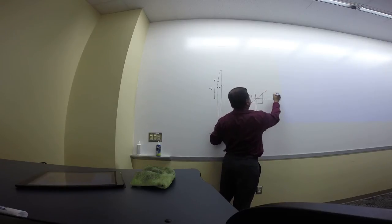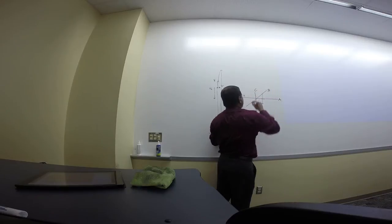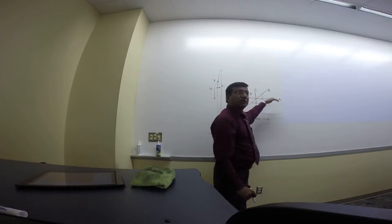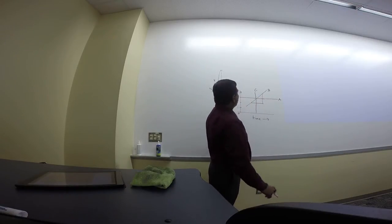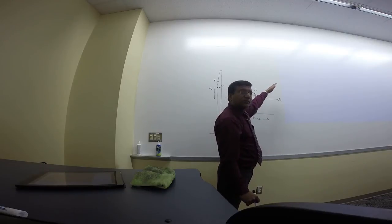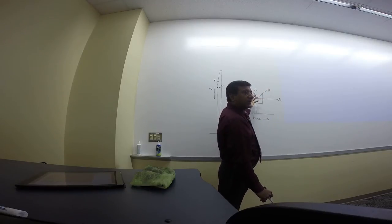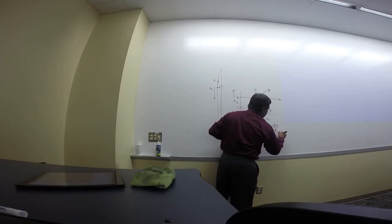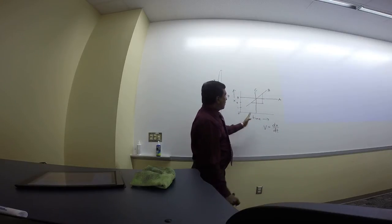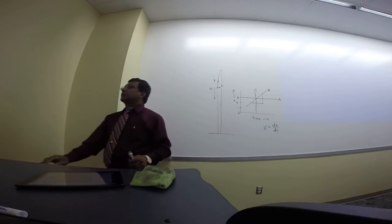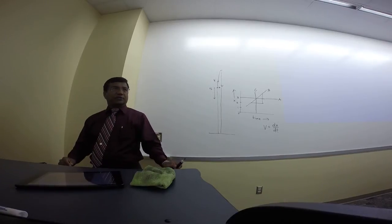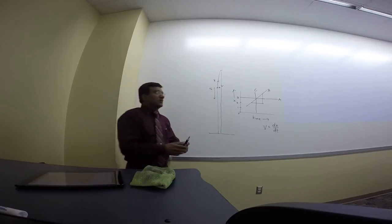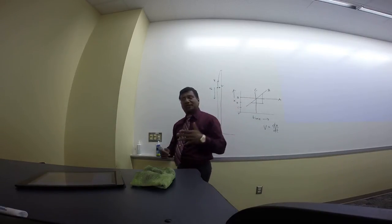Reviewing the three graphs: Graph A — horizontal line — object at rest, not moving. Graph B — diagonal line — moving at constant speed; slope gives speed since velocity = dx/dt. Graph C — vertical line — infinite slope, meaning infinite speed. Zero time change while position changes means the object is flying across in zero time. The answer for graph C is moving with infinite speed.